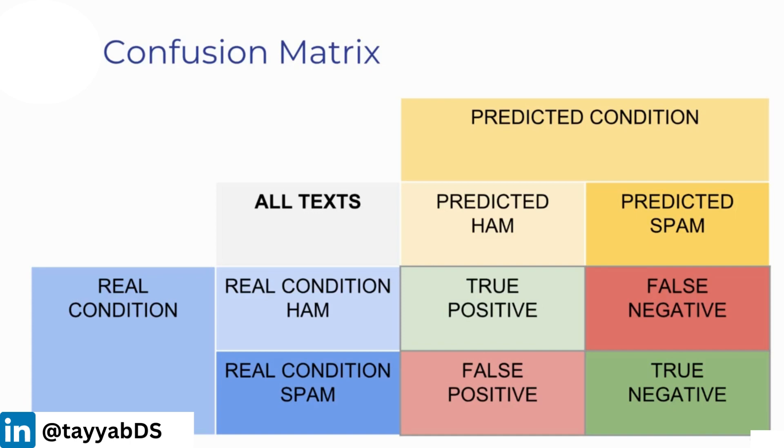Looking at it more simplified for our particular example with text messages, we have the real condition and the predicted condition. The real condition is either HAM or spam, and the predicted condition is predicting HAM or predicting spam. You'll notice that if the real condition is HAM and we predicted HAM, then we have a true positive. We correctly predicted that this was positively HAM.